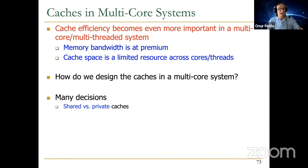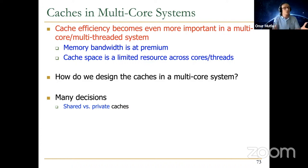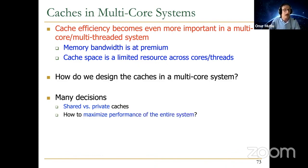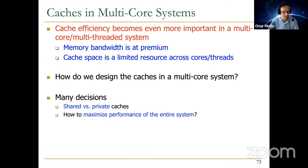The question becomes: how do you design the caches in a multi-core system? Many more design decisions come into play. Do you make the caches shared across threads, shared across cores, or do you keep them private to threads or cores? This is similar to the decision of whether to share caches between instructions and data, or keep them separate — except it now happens across threads and cores. How do you maximize the performance of the entire system, taking into account miss rates, miss latencies, and costs?